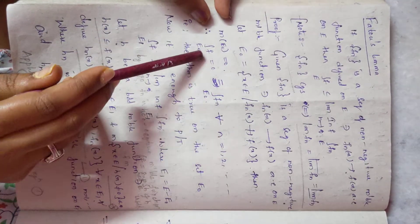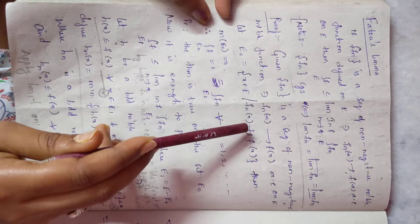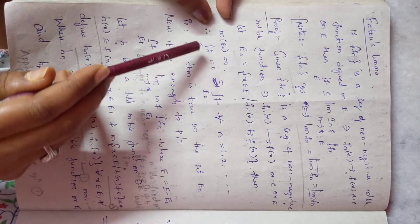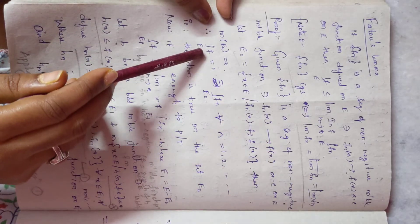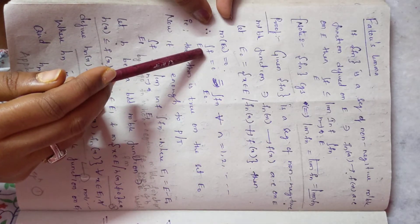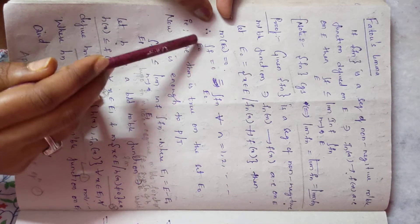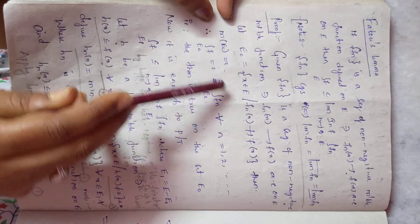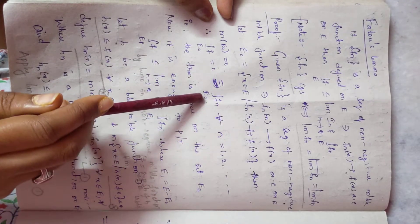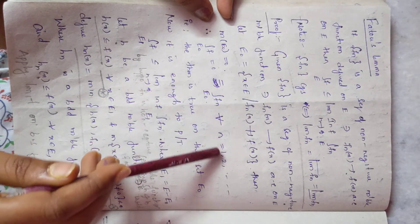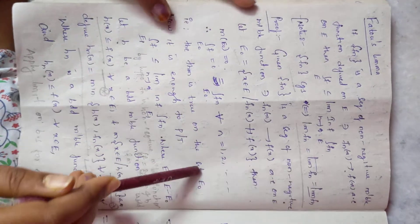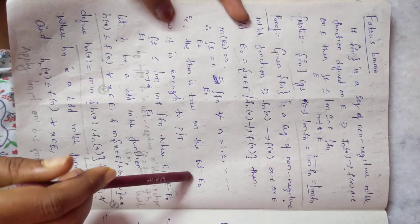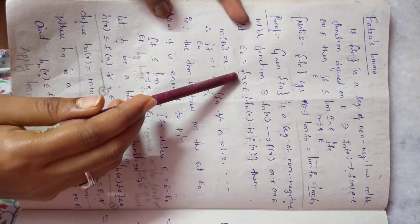Therefore, fₙ does not tend to f(x) on a set whose measure is zero. So the integral of f over E₀ is equal to zero, which equals the integral of fₙ over E₀ for all n = 1, 2, ... Now, the theorem is true on the set E₀.